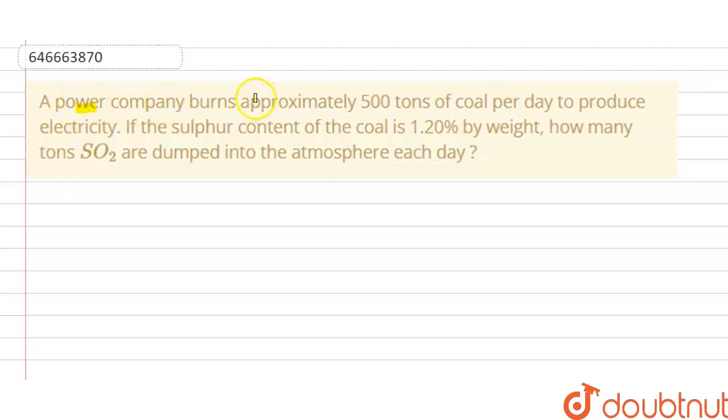A power company burns approximately 500 tons of coal per day to produce electricity. If the sulfur content of the coal is 1.20% by weight, how many tons of SO2 are dumped into the atmosphere each day? So the solution: